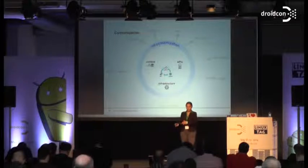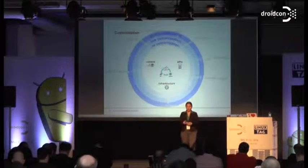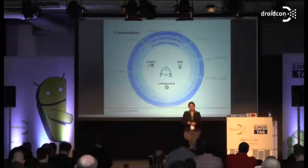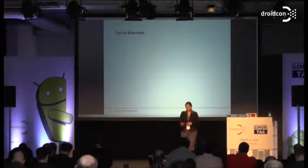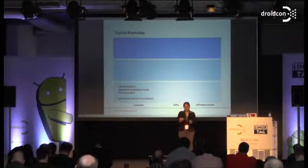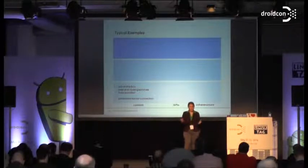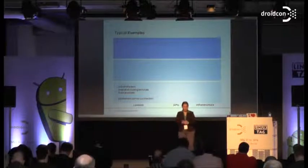We can compare from no customization to low customization to high customization — this is the spread of customization, and it's time to explore this potential. For content with no customization, an example is an out-of-the-box map and routing service from a provider — you just use it, it's pure consumption and you just need a provider and a connection.